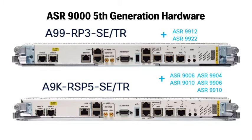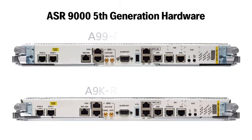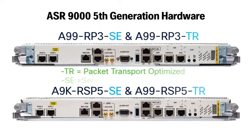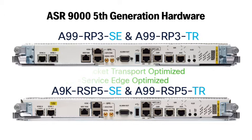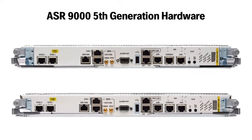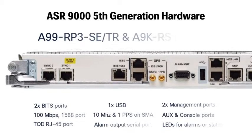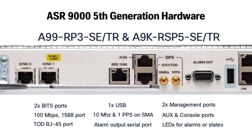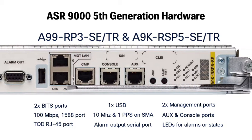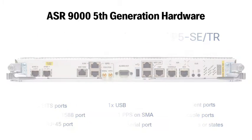Both the RP3 and RSP5 come in two flavors: the packet transport optimized version, or TR for short, and the service edge optimized version, or SE. When it comes to the route processor, the SE version has more RAM than the TR version, which enables more processing speed. However, both the RP3 and RSP5, whether SE or TR, have the exact same ports and LEDs on the front panel.